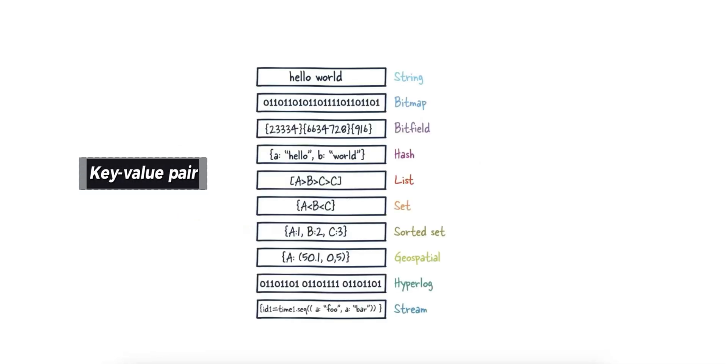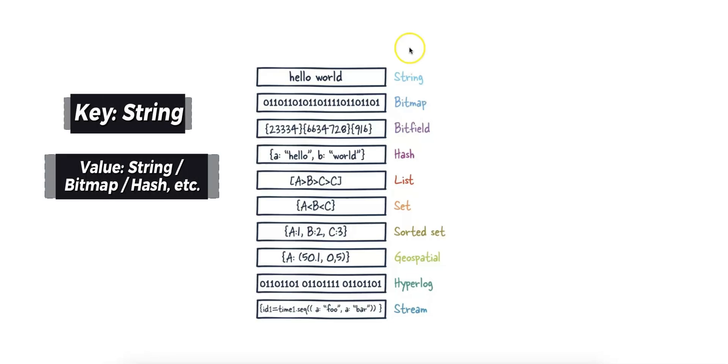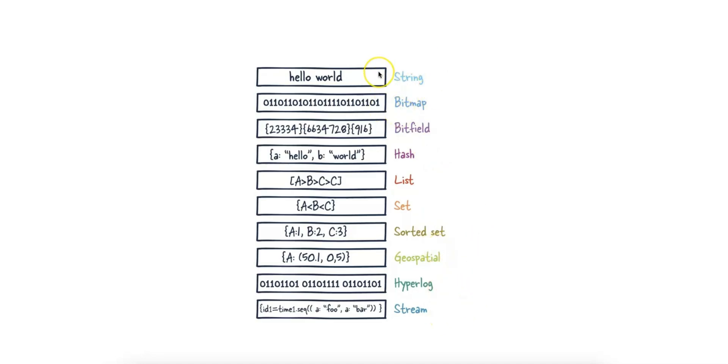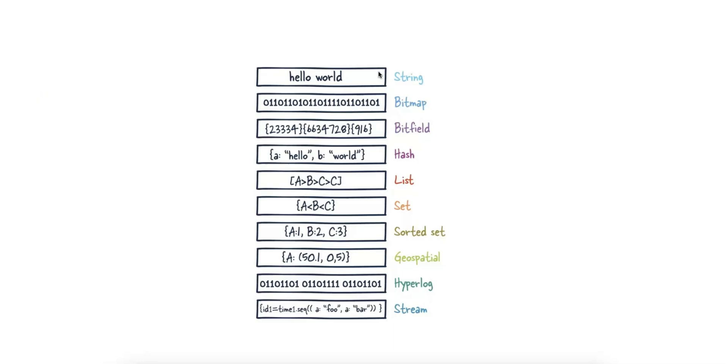The key-value pair is the most fundamental data structure in Redis. Redis stores keys as strings, and the associated values can be various data types, but the simplest form is the string value. A key-value pair allows for fast lookups and manipulation, ideal for caching and real-time operations.